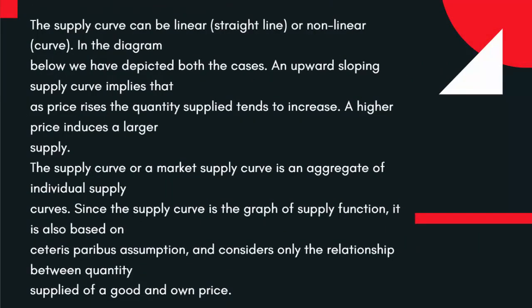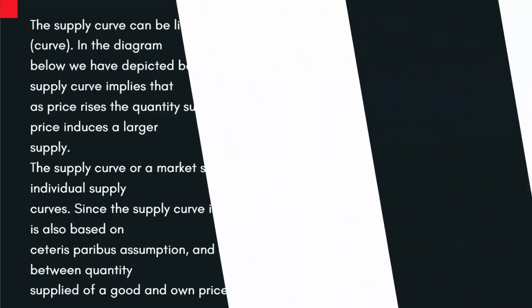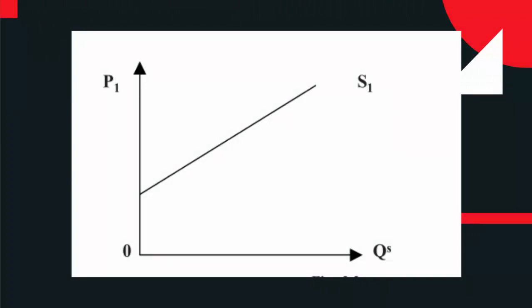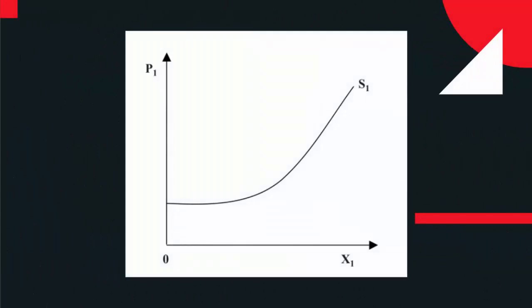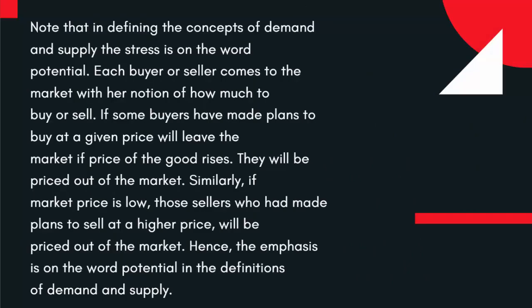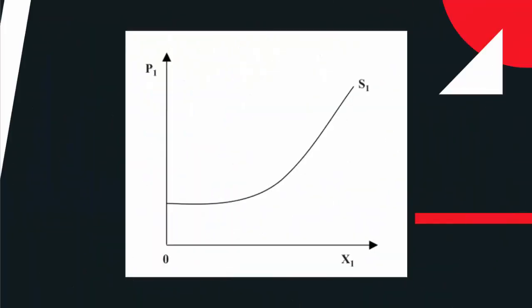The Supply Curve can be linear (straight line) or non-linear (curve). Both cases are depicted in the diagram below. An upward sloping supply curve implies that as price rises, the quantity supplied tends to increase — a higher price induces a larger supply. The Supply Curve, or market supply curve, is an aggregate of individual supply curves. Since the Supply Curve is the graph of the Supply Function, it is also based on the Ceteris Paribus assumption, and considers only the relationship between quantity supplied of a good and own price.